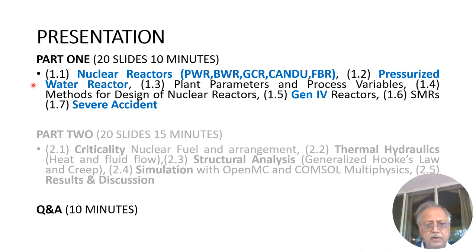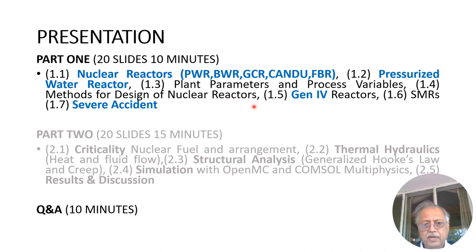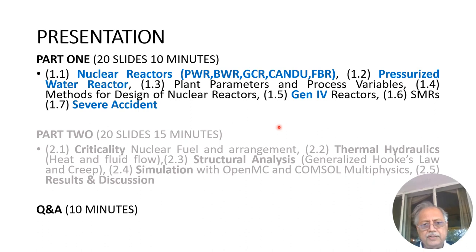In this part of the presentation, I'll begin with section 1.1 introducing nuclear reactors, then 1.2 on the pressurized water reactor, since PWRs are about 70% of the total nuclear power reactors in the world. Section 1.3 covers plant parameters, design parameters, and process variables such as temperature, pressure, and flow rates. Then 1.4 design methods, 1.5 Gen4 reactors, 1.6 small and modular reactors, and 1.7 how we define a severe accident in nuclear power plants.